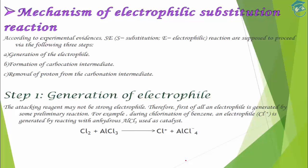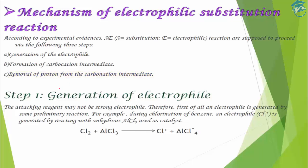Now let's analyze the mechanism of electrophilic substitution. The mechanism is a three-step process. First, there is generation of the electrophile. Second, the electrophile attacks the benzene ring and a carbocation intermediate is formed. Third, a proton is removed so that aromaticity is restored. You can refer to the previous chapter on general organic chemistry for details on electrophiles, nucleophiles, and carbocation stability.